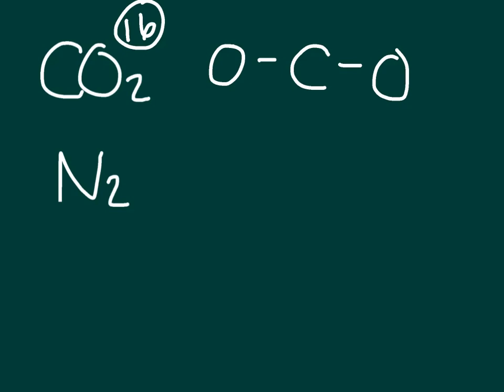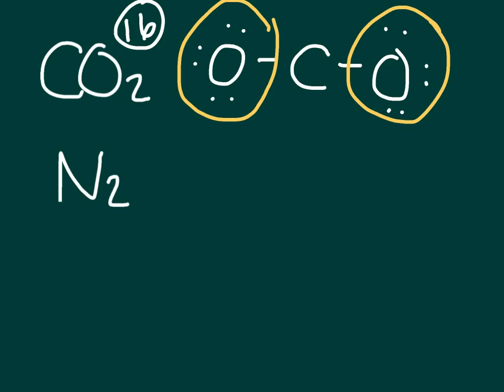Step four: add electrons to the outer atoms. I have to add electrons to my oxygens until I reach sixteen. I start with four electrons already placed, and I add more until I reach sixteen total. Now each oxygen has eight electrons — great. But the carbon still only has four. Moving to step five: add electrons to the central atom. Wait — I already have sixteen electrons, so I can't add anything else to the central atom.